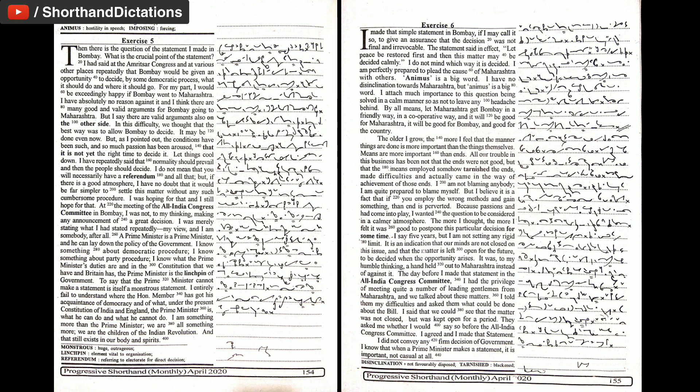Then, there is the question of the statement I made in Bombay. What is the crucial point of the statement? I had said at the Amritsar Congress and at various other places repeatedly that Bombay would be given an opportunity to decide by some democratic process what it should do and where it should go.